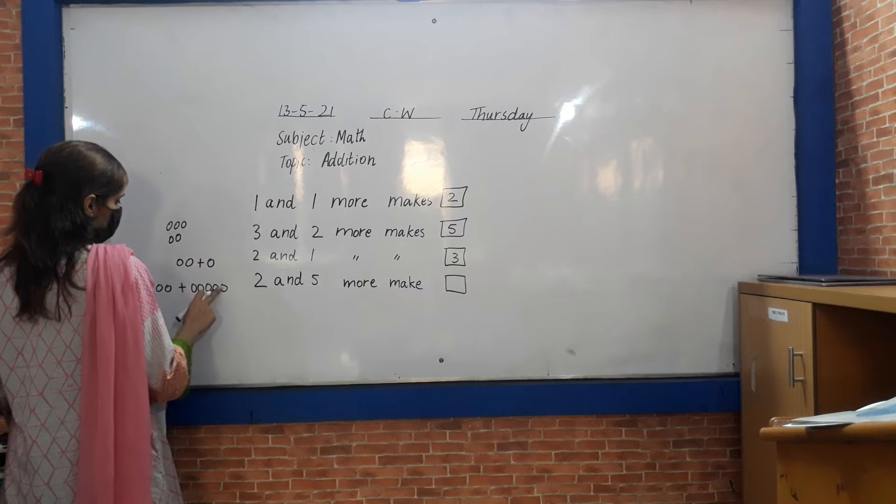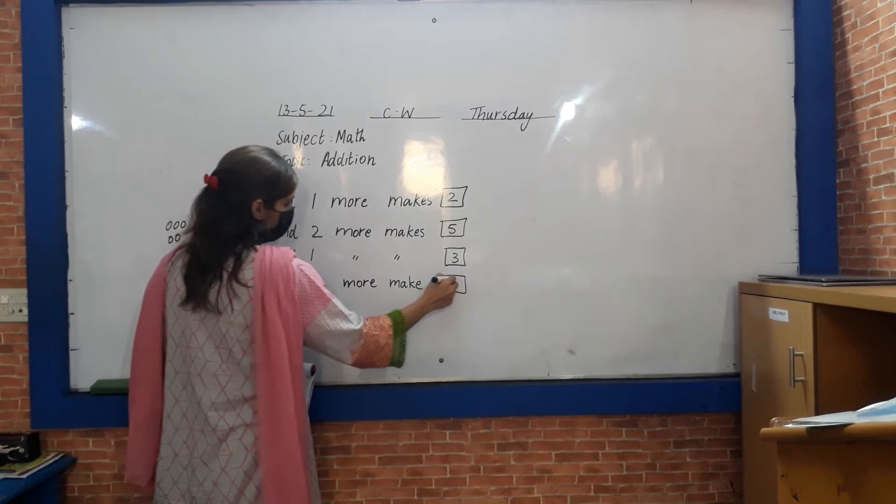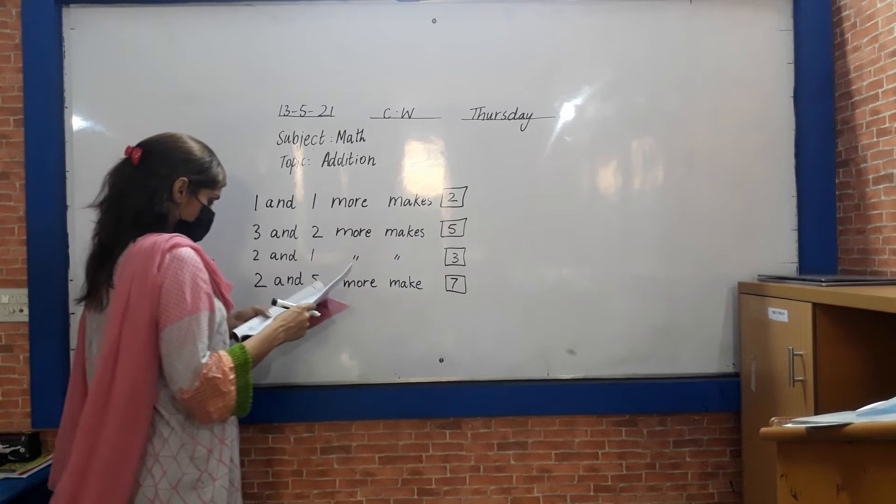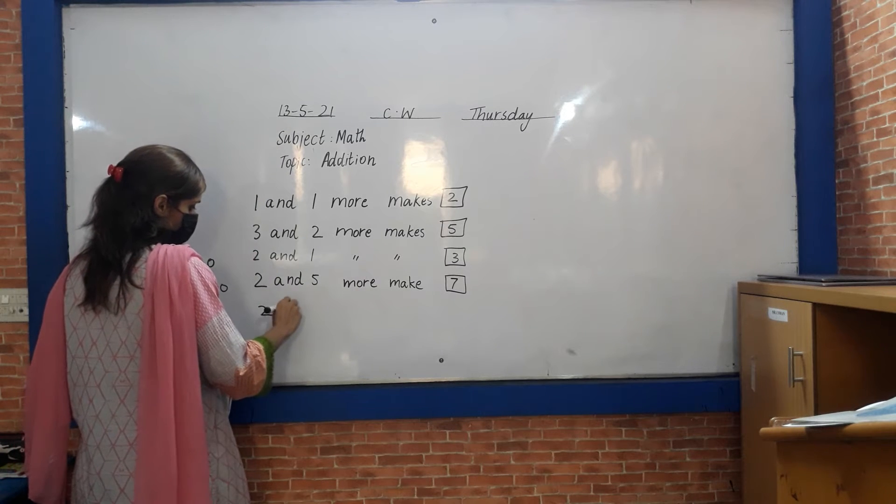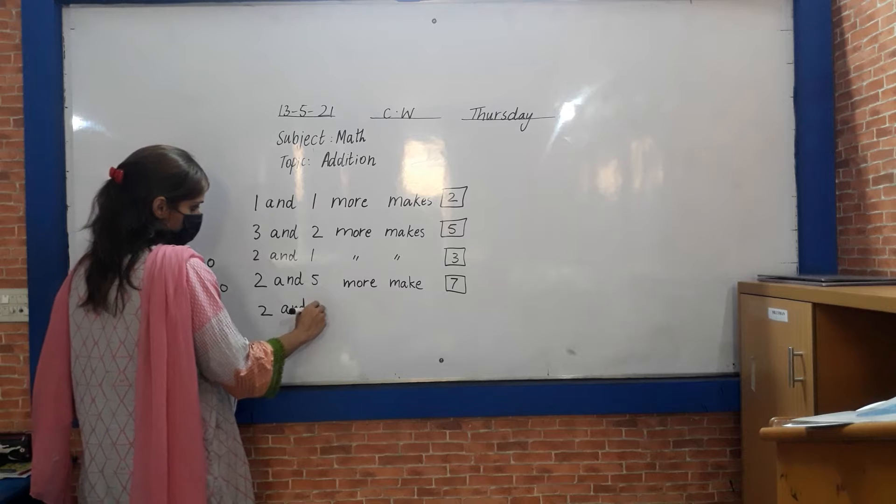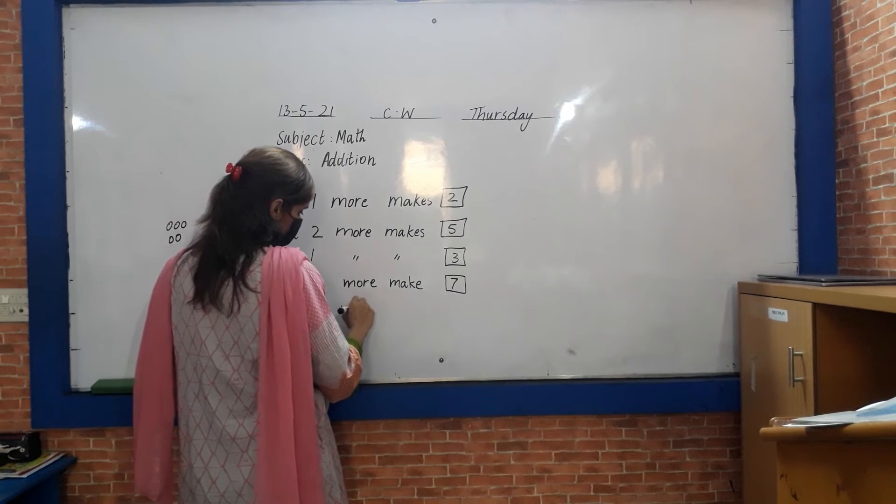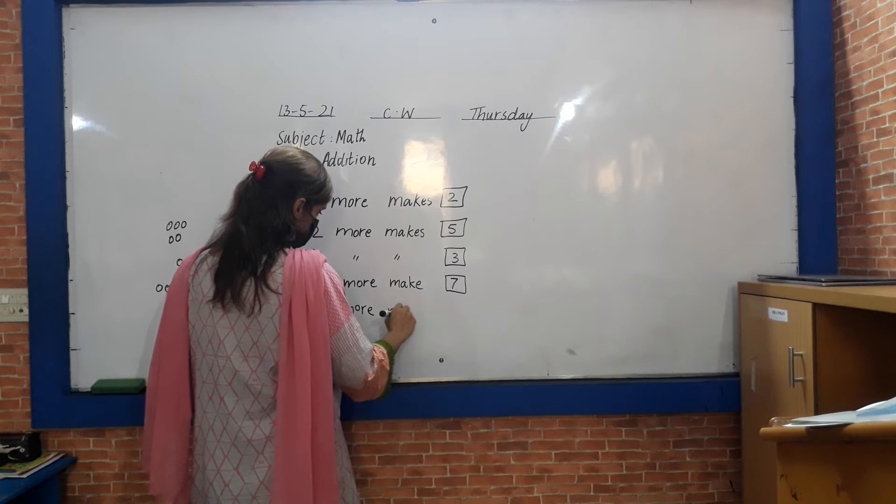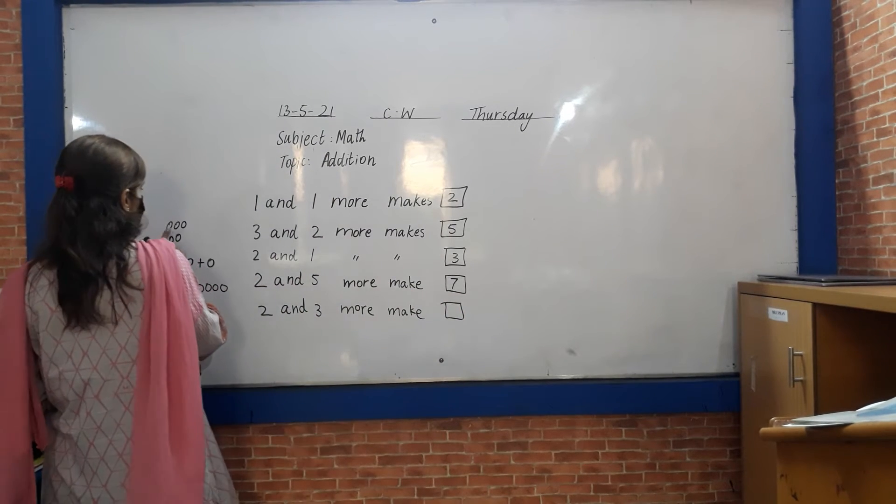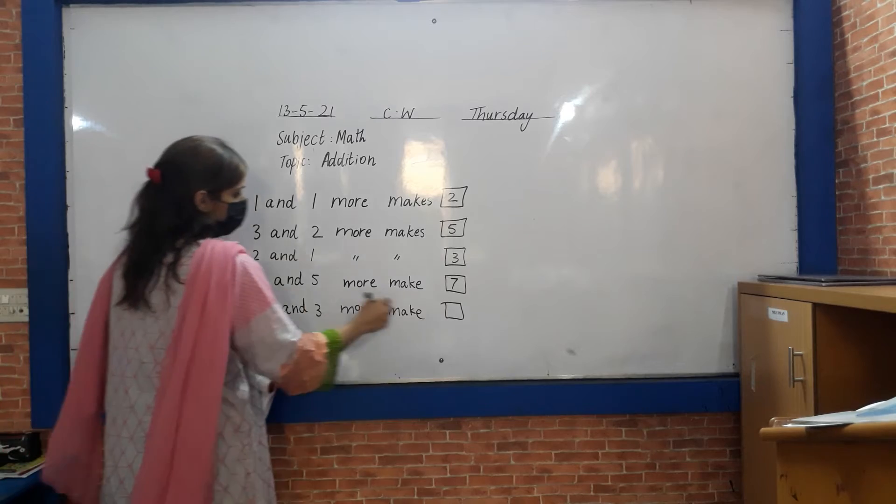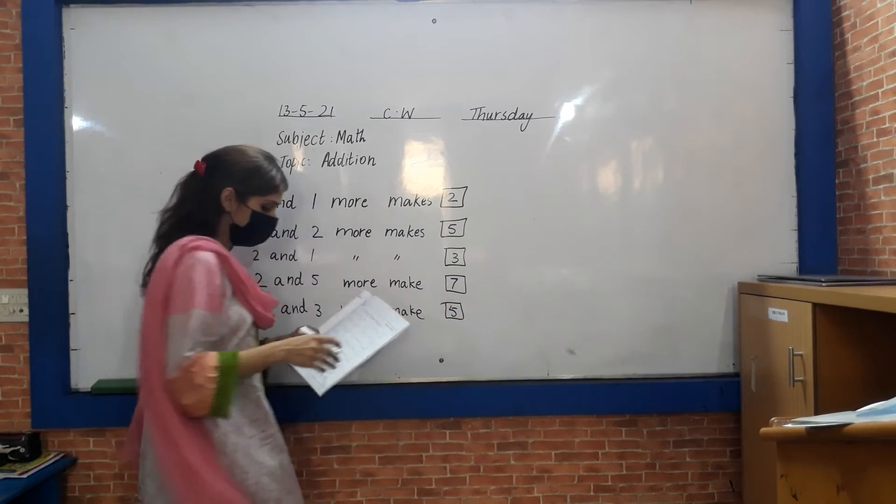One, two, three, four, five, six, seven. Two and three. Two and three more makes five. One, two, three, four, five. It will make five.